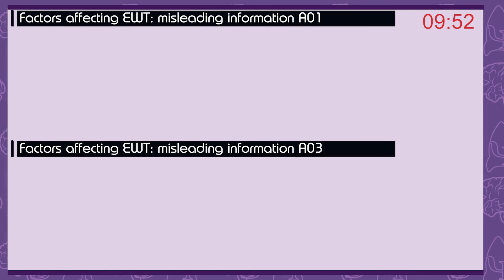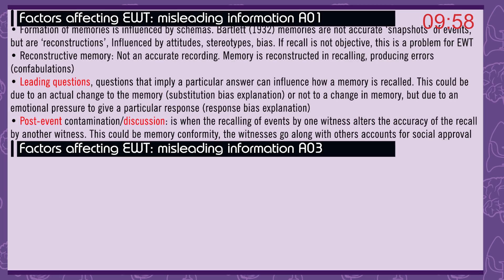Factors affecting the accuracy of eyewitness testimony: misleading information. Formation of memories is influenced by schemas. Bartlett in 1932 said memories are not accurate snapshots of events but are reconstructions, influenced by attitudes, stereotypes, and bias. If recall is not objective then this is a problem for eyewitness testimony. Reconstructive memory: memory isn't an accurate recording — it's reconstructed in recalling, producing errors called confabulations. Leading questions: questions that imply a particular answer can influence how a memory is recalled. This could be due to an actual change to the memory — substitution bias — or not a change in memory but due to emotional pressure to give a particular response — response bias.